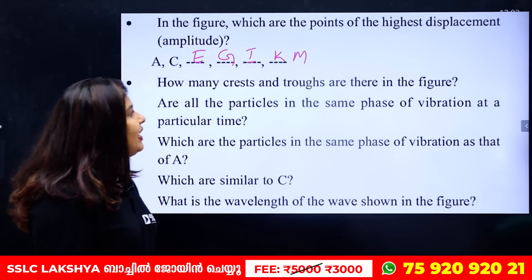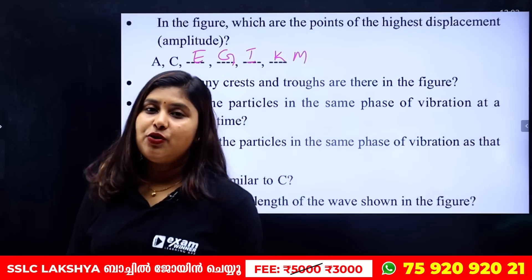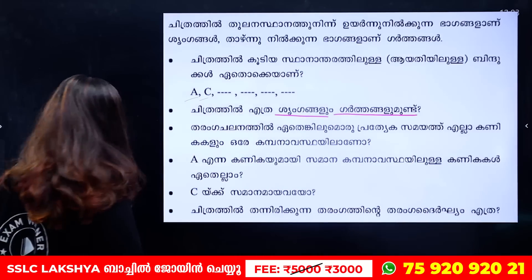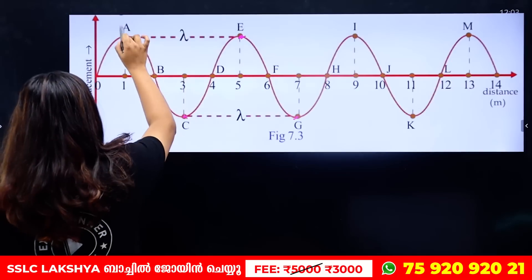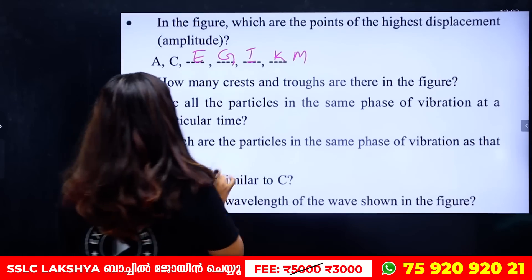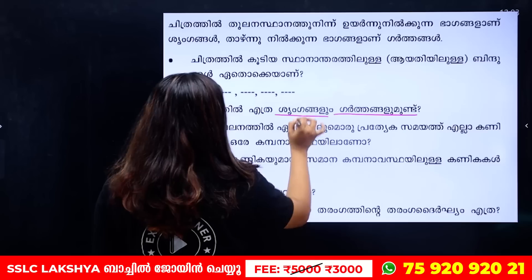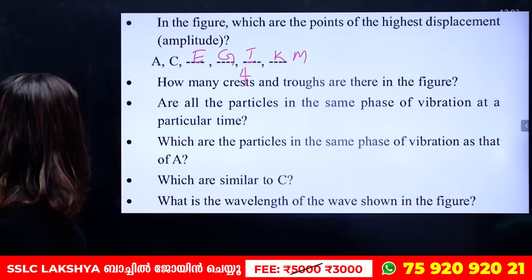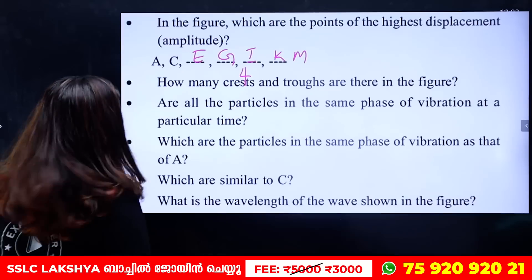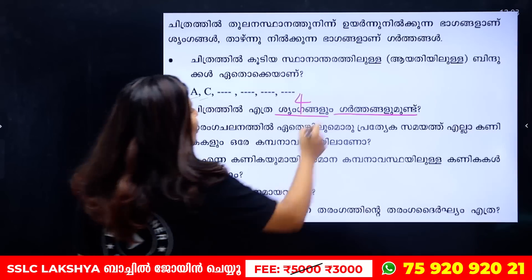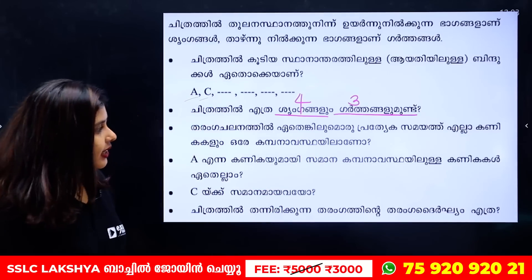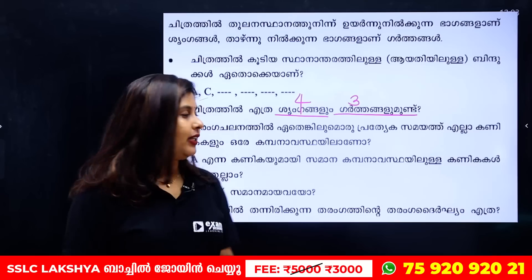How many crests and troughs are there? The crests: 1, 2, 3, 4 — so there are 4 crests. How many troughs? 1, 2, 3 — so there are 3 troughs.